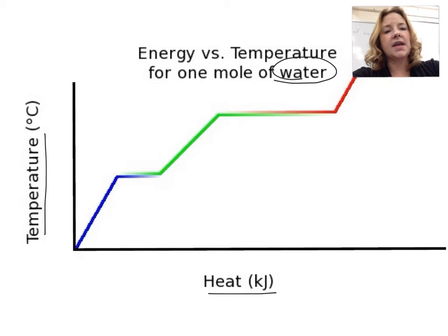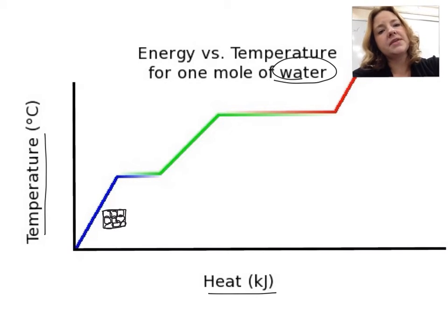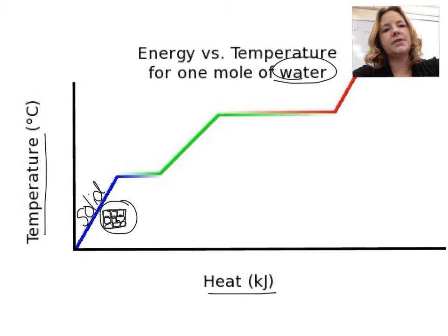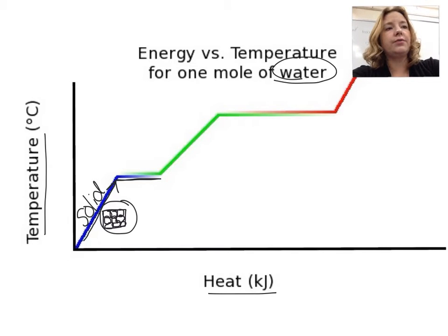We start as a solid, and when we are in the solid state, our material is going to be very compact with its molecules. I'm going to label this stage as being solid. At this point the temperature is increasing — we can see that our molecules are gaining energy — and then the temperature stays the same for a while. The reason it stays the same is that the molecules are absorbing the energy in order to go from a solid to a liquid. We call this our melting point.